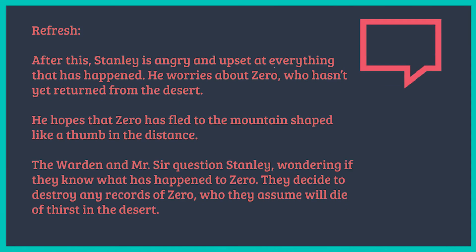In the next chapter, we see Stanley angry and upset at everything that's happened. He worries about Zero, who hasn't yet returned from the desert. He hopes that Zero has fled to the mountain shaped like a thumb in the distance, which they call God's Thumb. The warden and Mr. Sir question Stanley, wondering if they know what has happened to Zero. They decide to destroy any records of Zero, who they assume will die of thirst in the desert. And since they believe Zero has no family, they don't think anybody will come and look for him.